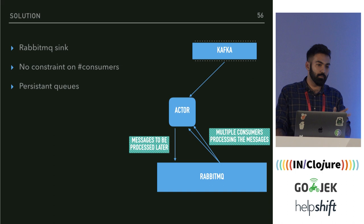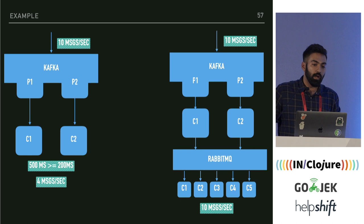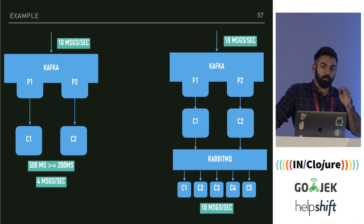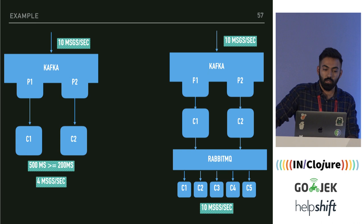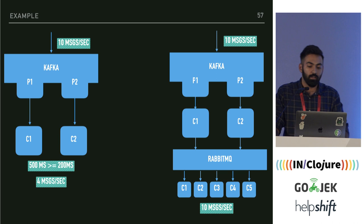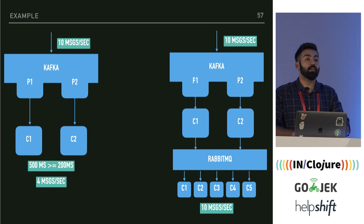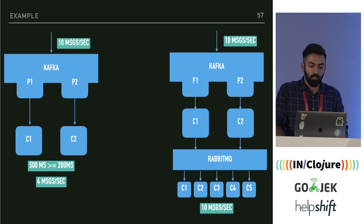Here's how it works: say you have a producer producing to a topic called Flash at 10 messages per second with only two partitions. To have no lag, your mapper function should process messages at about five messages per second per consumer — roughly 200ms execution time. But if your execution time is 500ms, you can only process four messages per second. So instead: only two consumers sync all messages into RabbitMQ quickly, then you set up five consumers on RabbitMQ on the same infra, each consuming two messages per second, processing 10 messages per second in total.